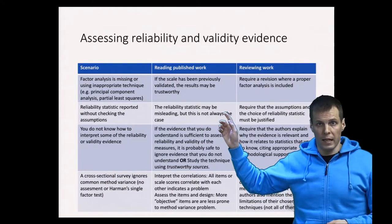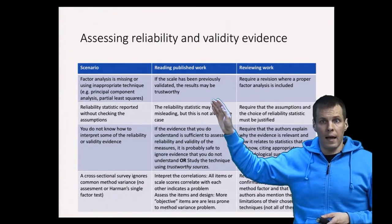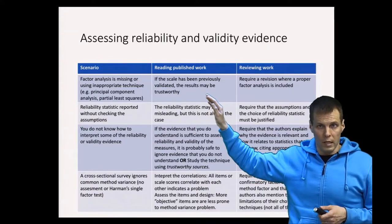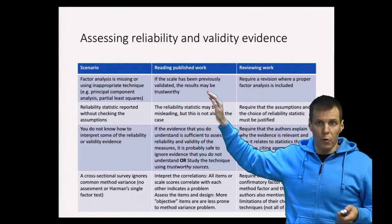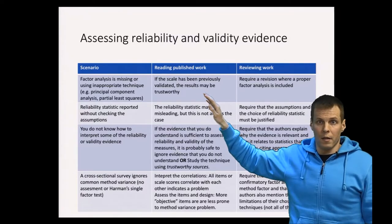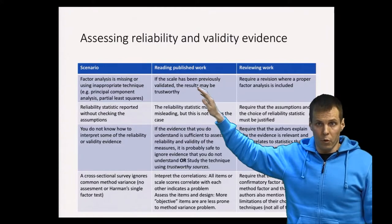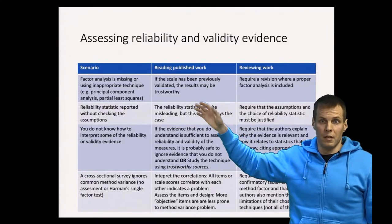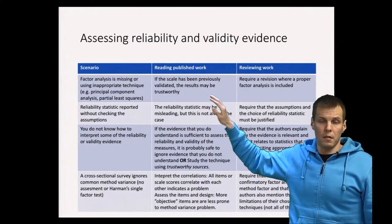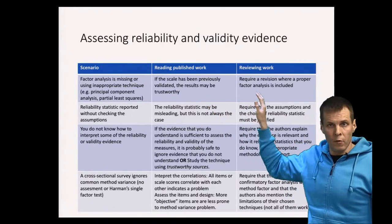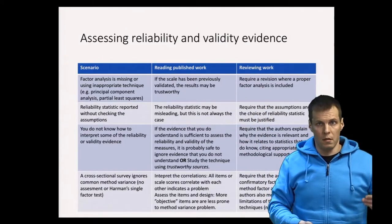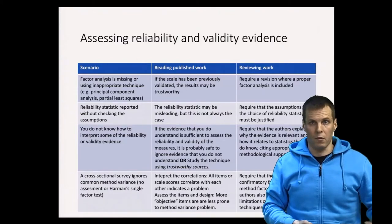If the scale has been previously validated in multiple different studies, you need to check whether the previous validation evidence is actually valid. The fact that a scale has been applied before and some statistics reported does not mean it has been properly validated — for example, authors may have used principal component analysis, which is not useful for scale validation, and still gotten published. If there is actual valid prior evidence you can check, it is probably okay. If you are reviewing someone's work and they present a multi-item scale without factor analysis, require a revision that includes the factor analysis results.